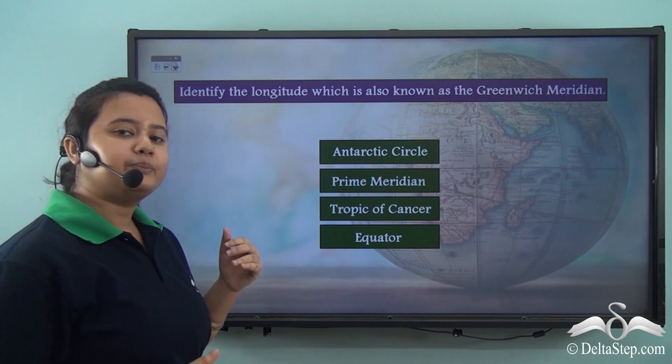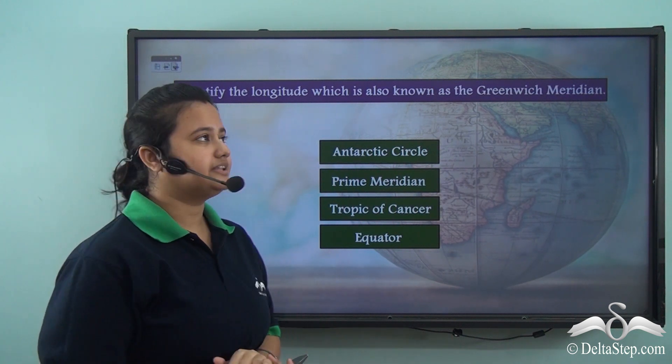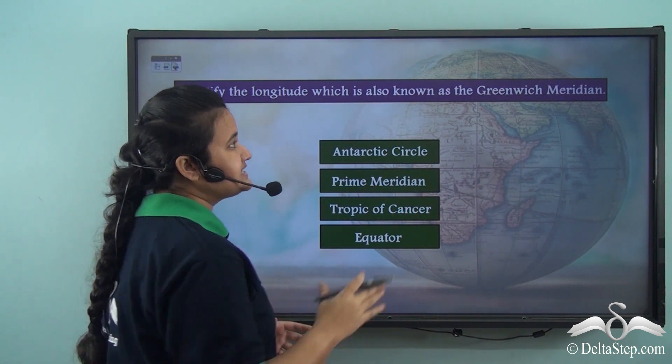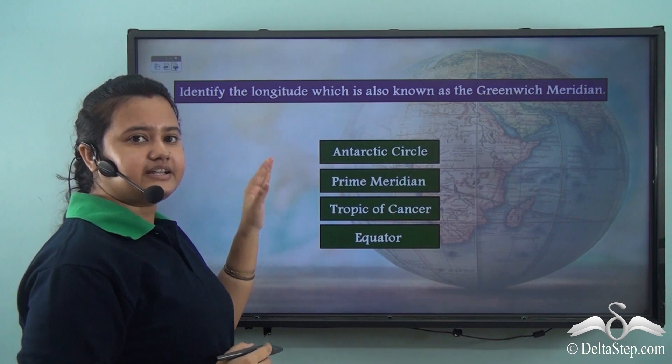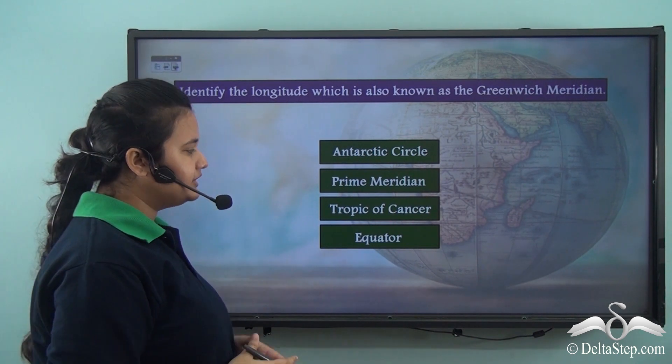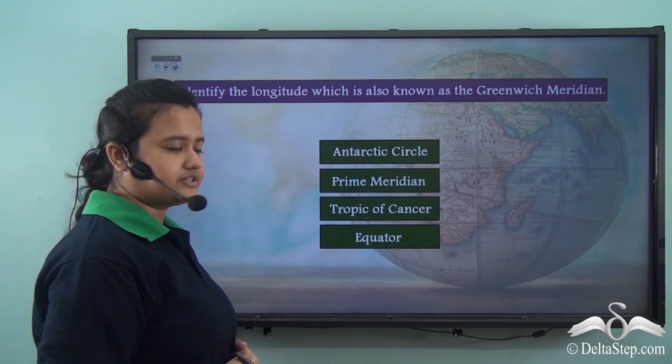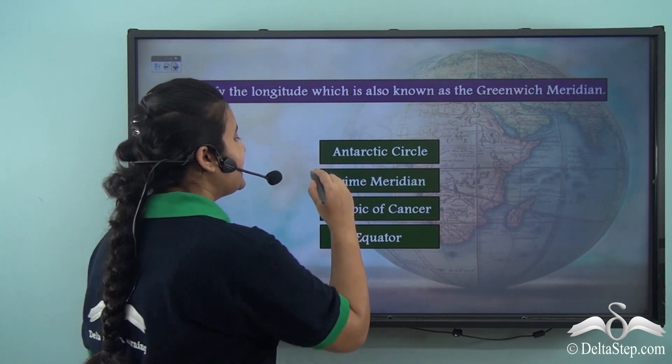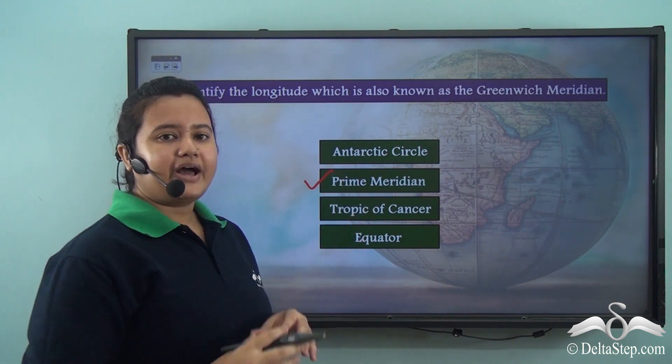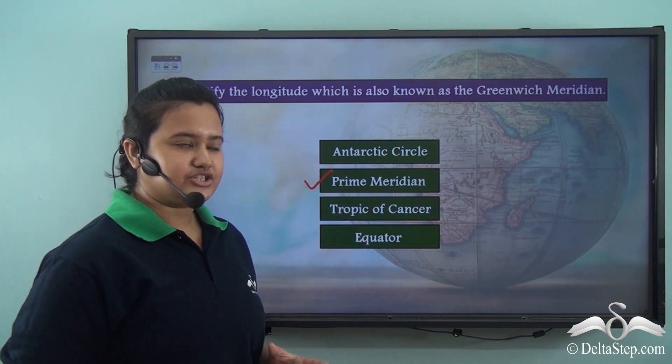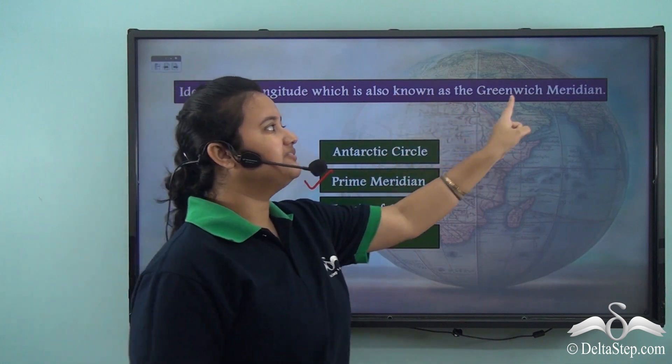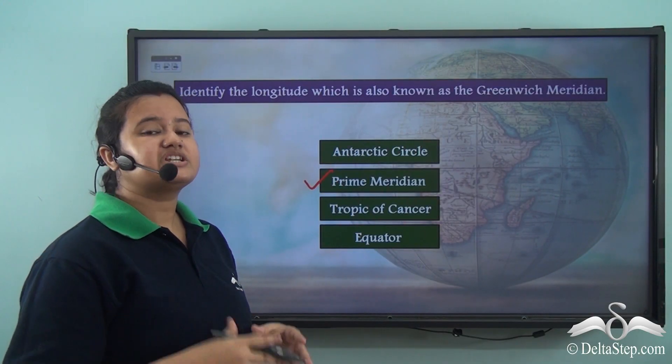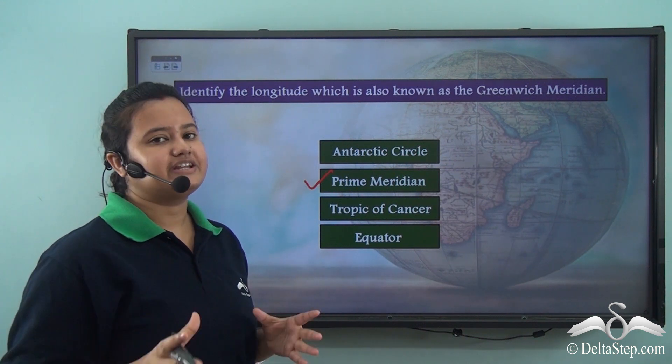Before we proceed with our lesson, let us try to answer this. Identify the longitude which is also known as the Greenwich Meridian. Is it the Antarctic Circle, Prime Meridian, Tropic of Cancer or the Equator? Yes, the correct answer is Prime Meridian. Prime meridian is the longitude that is also known as the Greenwich Meridian, while the rest of the names denote different latitudes.